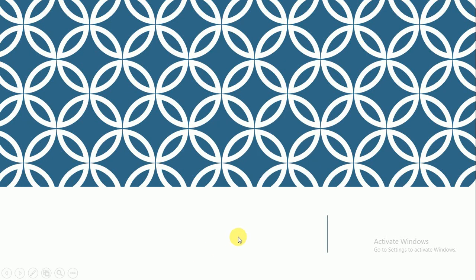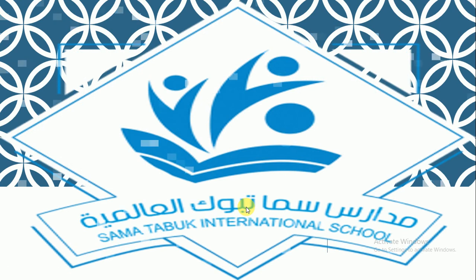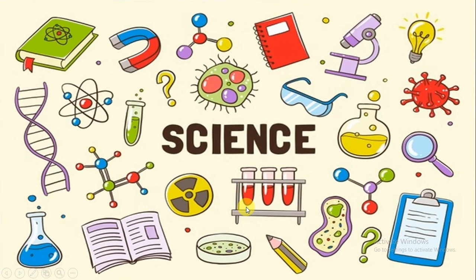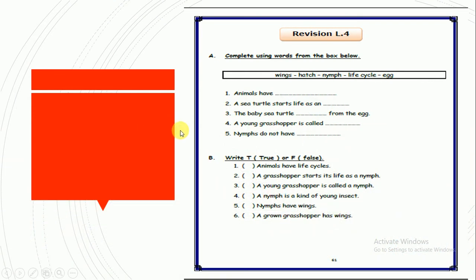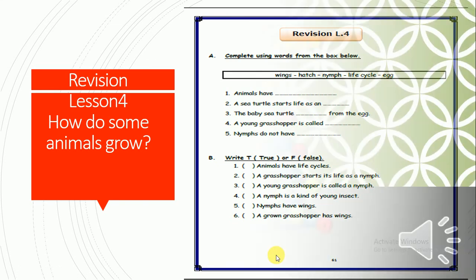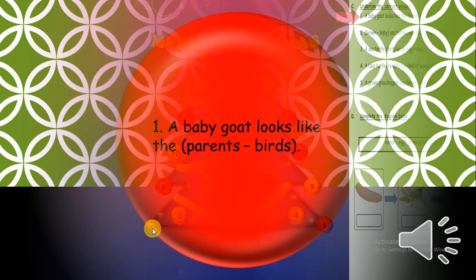As-salamu alaykum wa rahmatullahi wa barakatuh. Hi guys, how are you? Sama al-Tamuk International Schools, and we study science together! Today inshallah we're gonna talk about Lesson 4, and this is revision: How do some animals grow? You're gonna find these questions in the booklet pages 61, 62, and 63. As usual, we have Christmas tree games, and we're gonna start with number 1.